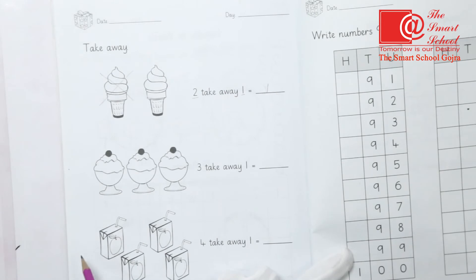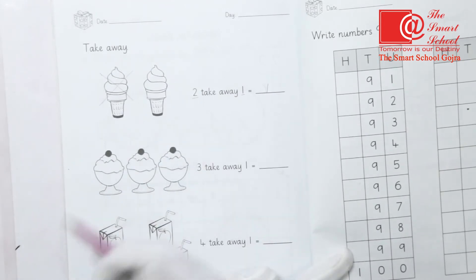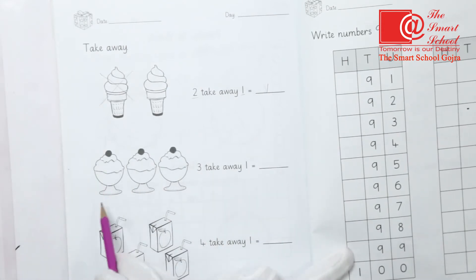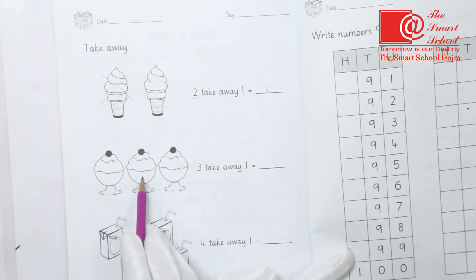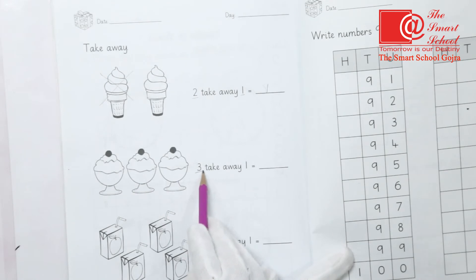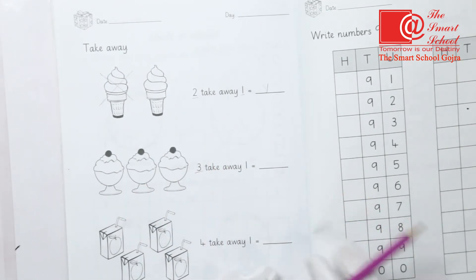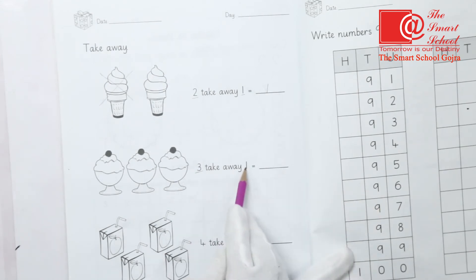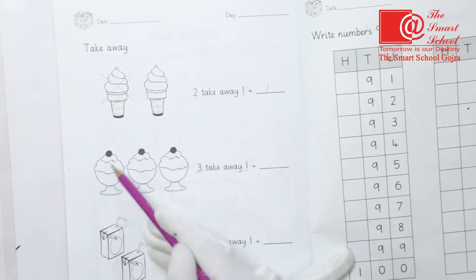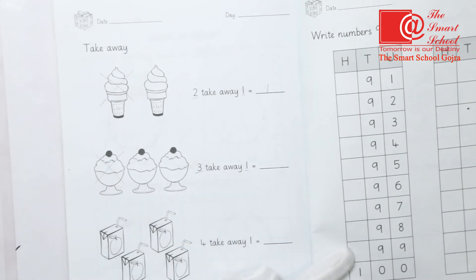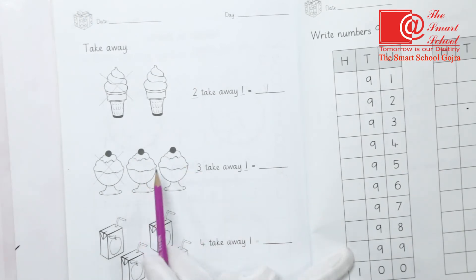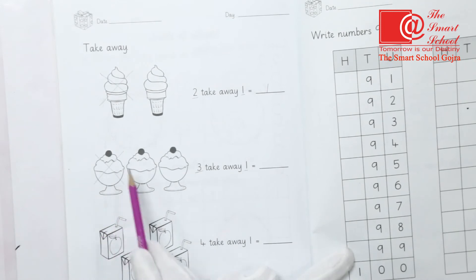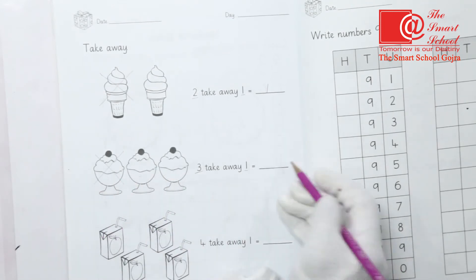Now we have another ice cream example. This time: three take away one. Count how many ice creams — one, two, three. Three ice creams, and we have to minus one. We cross one ice cream, just like before. When we cross it, count the remaining: one, two — two ice creams are left.